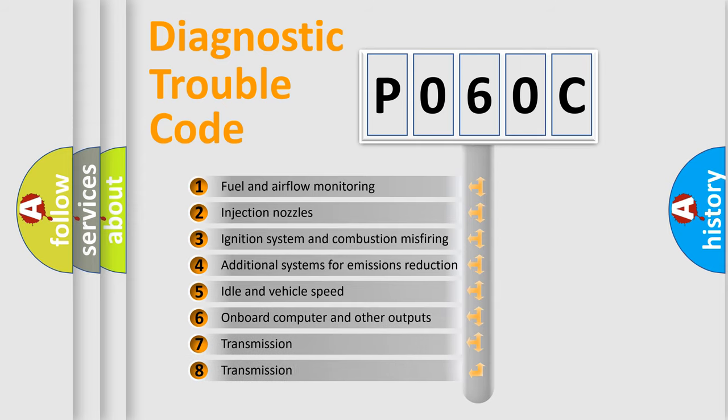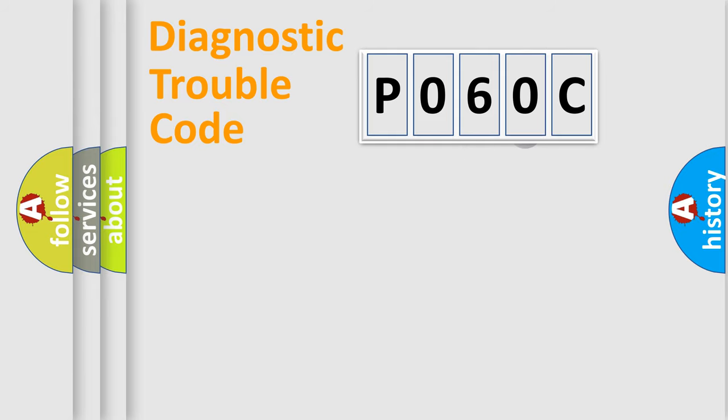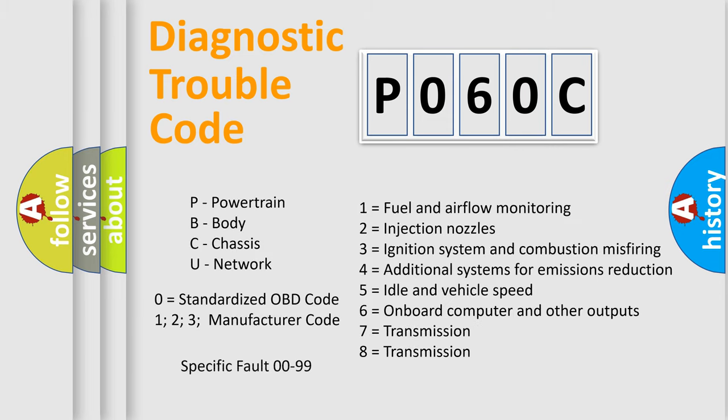The third character specifies a subset of errors. The distribution shown is valid only for the standardized DTC code. Only the last two characters define the specific fault of the group. Let's not forget that such a division is valid only if the second character code is expressed by the number zero.